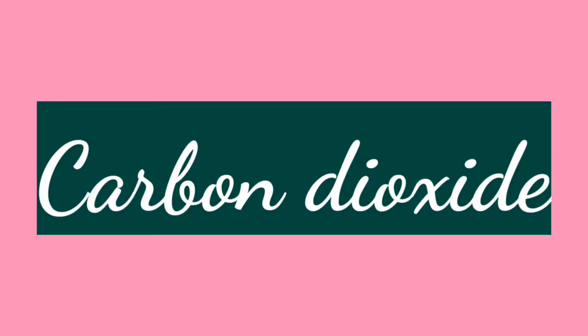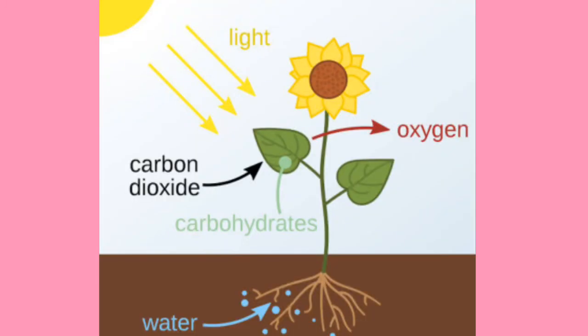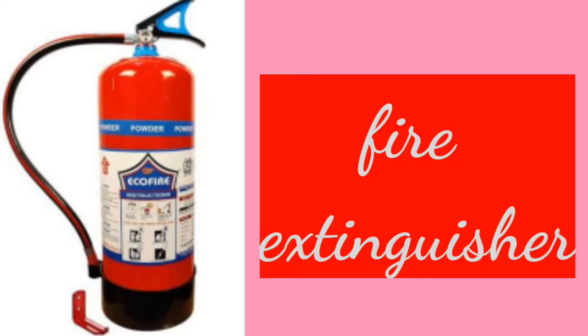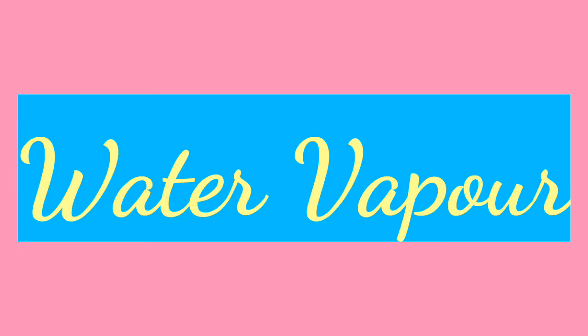Next is carbon dioxide. Green plants use carbon dioxide, water, in the presence of sunlight and chlorophyll to make their food — jisko hum photosynthesis bolte hai. Carbon dioxide is also used in fire extinguishers — aag ko bujhane ke liye.